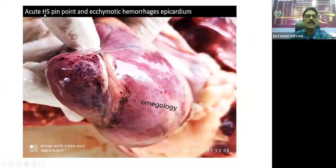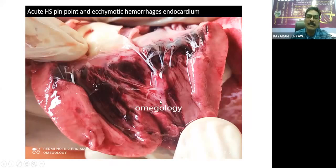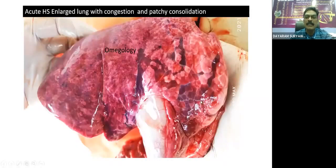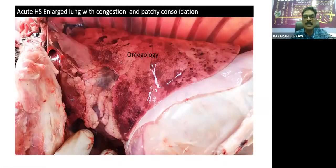In acute HS, we can see pinpoint hemorrhages over the surface of the epicardium — pinpoint as well as ecchymotic hemorrhages. Sometimes we get small pinpoint hemorrhages, and sometimes extensive ecchymotic type of hemorrhages throughout the endocardium. We can also see patchy type of pneumonia or patchy consolidation, where some portions are emphysematous and around them different lobes of the lung are affected with consolidated type of lobes.